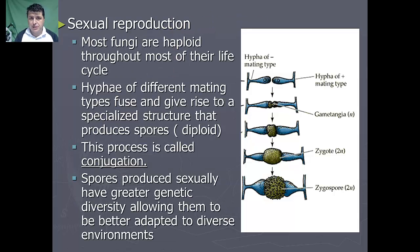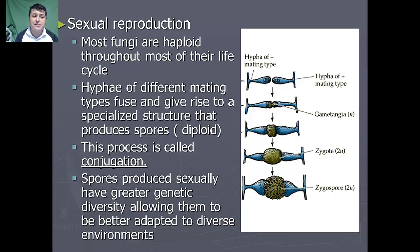Sexual reproduction in fungi is quite unique. Most fungi are actually haploid throughout their life cycle. Hyphae of different mating types — instead of male or female, we consider them plus or minus — are going to fuse and give rise to specialized structures that can produce spores, which will then be diploid. This process is called conjugation.